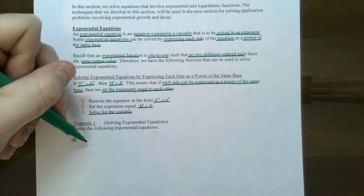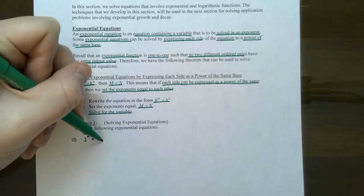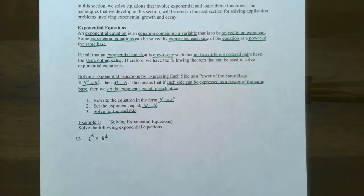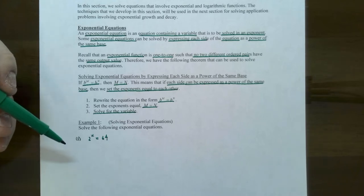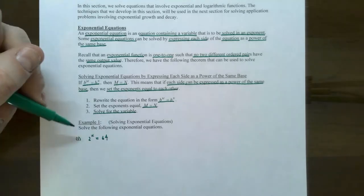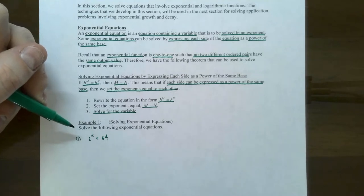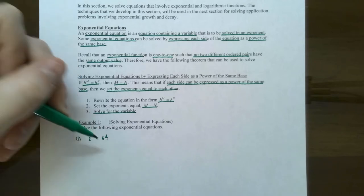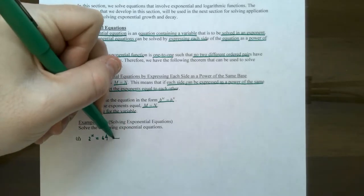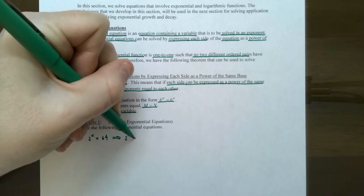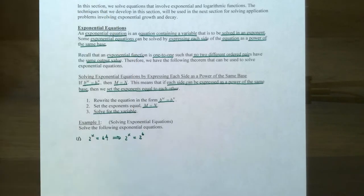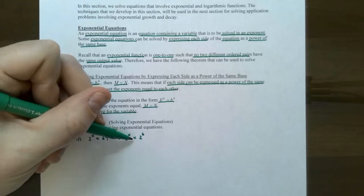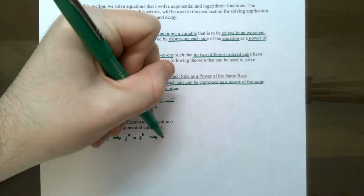Let's see how we use this with example one. Solve: two to the x power equals 64. We're going to solve this by rewriting both sides so they have the same base. The left side is base two raised to the x power. Can we rewrite 64 as base two to some power? Yes — 64 is two to the sixth power. Since the bases are the same and equal, the exponents must be equal, so x equals six.